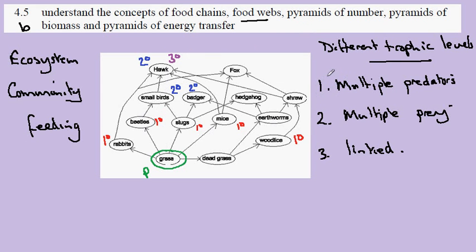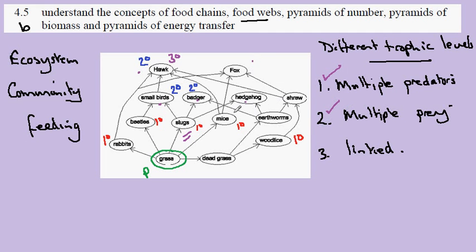Looking for evidence of multiple predators, we can see that the slug is prey to small birds, badgers, and hedgehogs. Looking for organisms which feed on a variety of different organisms, we have the example of the hawk, and here the fox — the fox is feeding on rabbits, mice, and shrews.